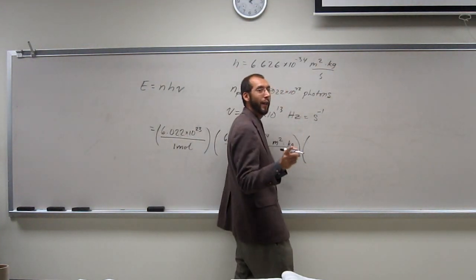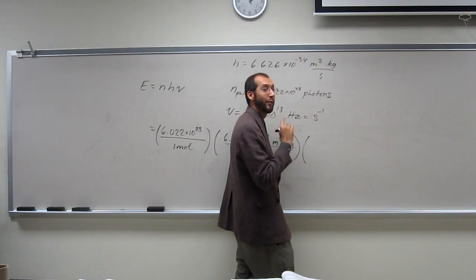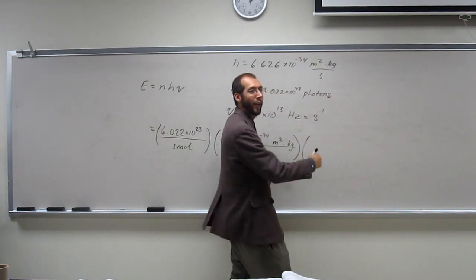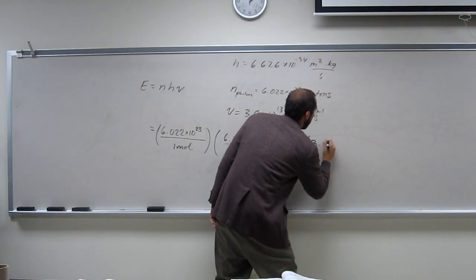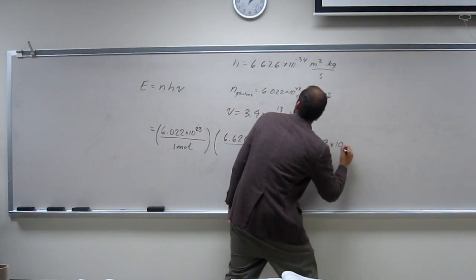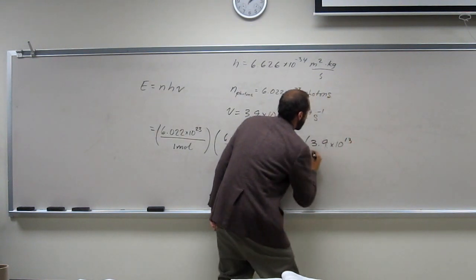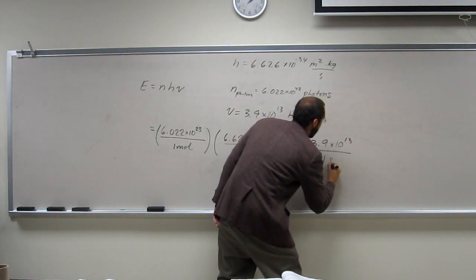And again, once you canceled out your units, you can figure it out, okay? So do that first. Okay, so 3.9 times 10 to the 13 per second.